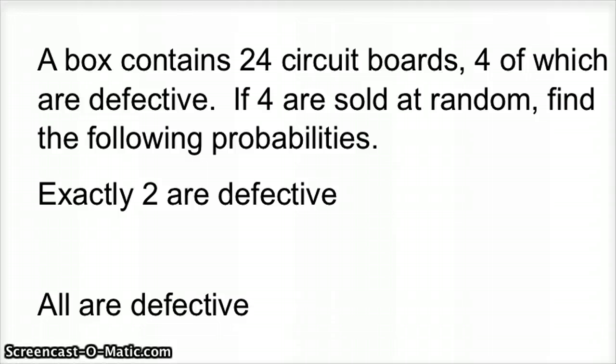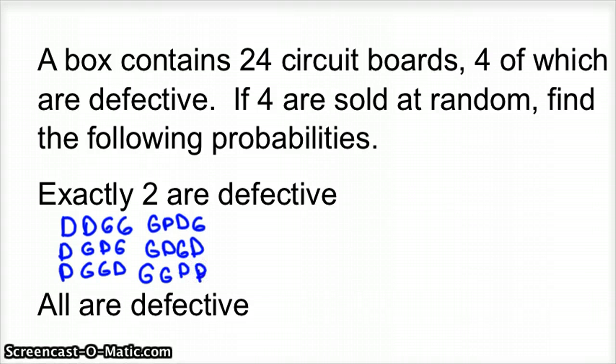So we could have, going by my original logic there, we could have defective, defective, good, good. We could have defective, good, defective, good. We could have defective, good, good, defective. And let me write them all down. Good, defective, defective, good. Good, defective, good, defective. And good, good, defective, defective. So those are all the possible ways that this outcome could happen. And there are six of them.